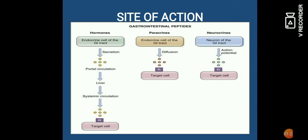Site of action — तीन हार्मोन्स आहार नाल के endocrine cells से निकलते हैं। इनका secretion portal circulation में आता है, उसके ज़रिए liver में आता है, फिर systemic circulation के ज़रिए target cells में जाते हैं। दूसरा paracrine होता है — endocrine cells से निकलता है, diffuse होते हैं, सीधे target cells में जाते हैं। तीसरा neurocrine होता है — neurons of the gastrointestinal tract, action potential होता है और target cells तक जाते हैं। इस प्रकार तीन तरह से process होती है।